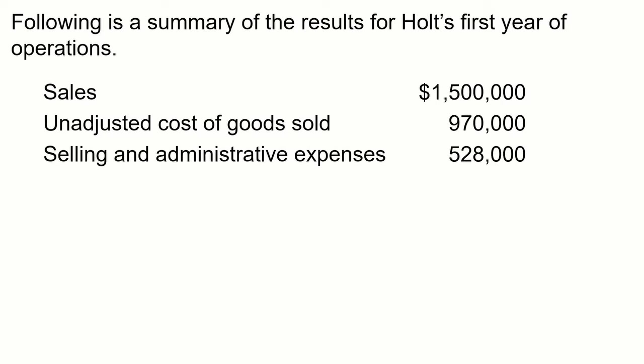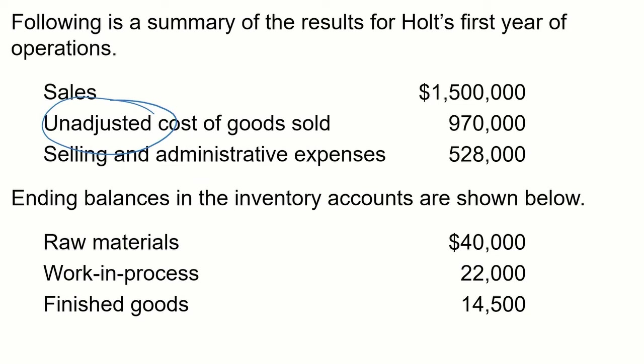Sales were $1,500,000. Unadjusted cost of goods sold is $970,000 and selling and administrative expenses were $528,000. That word 'unadjusted' is key — it implies there may be some adjustments to come. Ending balances in the inventory accounts are: raw materials $40,000, work in process $22,000, and finished goods $14,500.